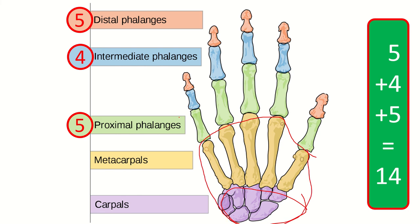And we start here. This is the proximal phalanges. Here we can see one, two, three, four, five - they are five in number. Then intermediate phalanges: one, two, three, four - they are four in number.